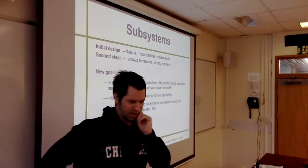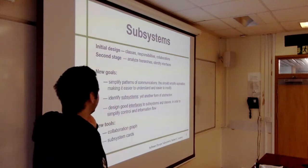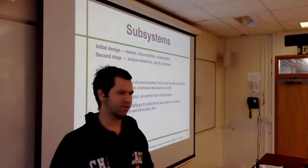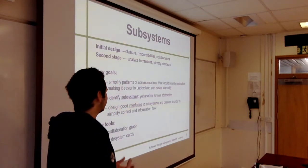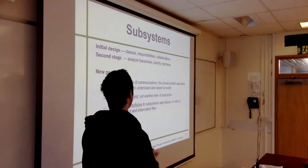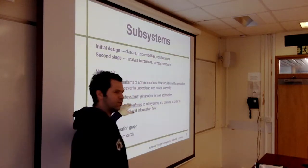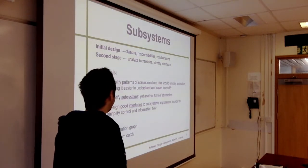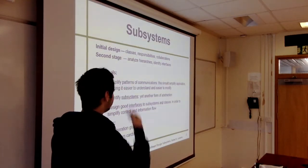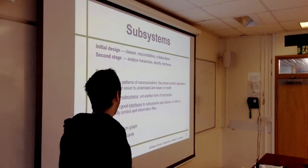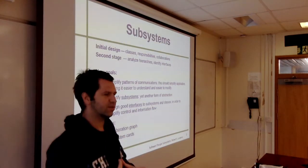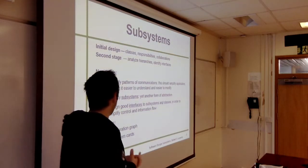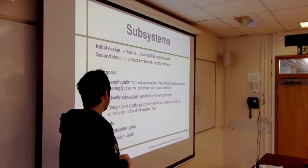The goals are to simplify the patterns of communication. If you have lots of classes and objects that are communicating, you want to simplify those communication patterns as much as possible. One way to do that is to identify subsystems. We can then design interfaces to subsystems and the classes inside the subsystems to simplify the flow of information. We also talk about collaboration graphs and subsystem cards here.